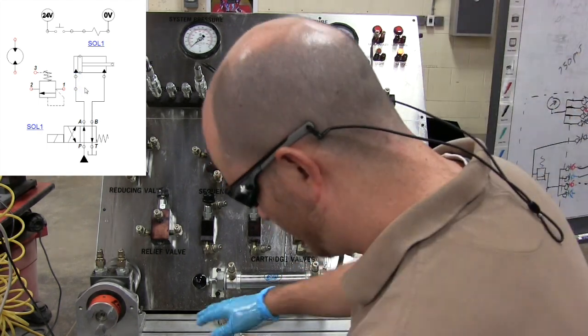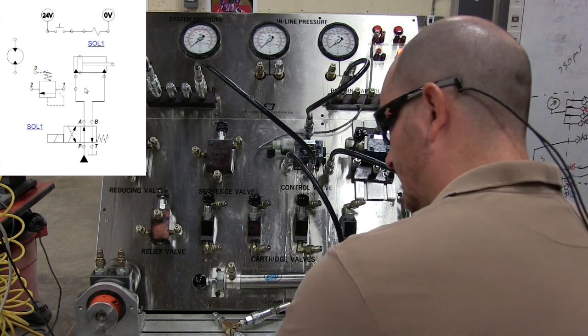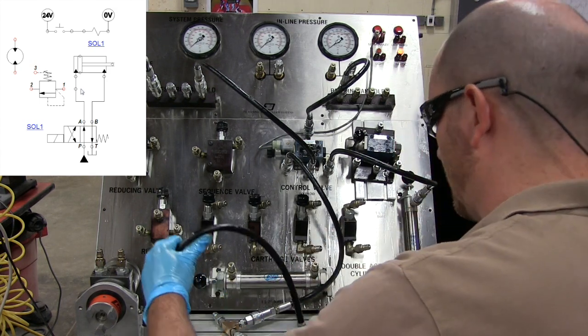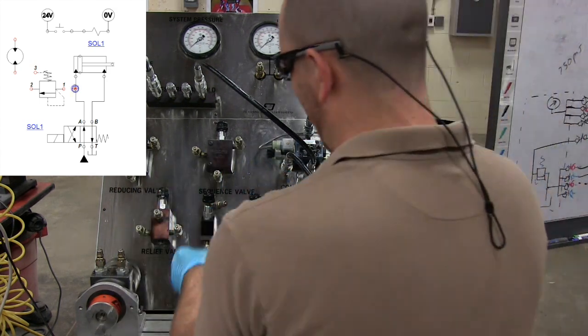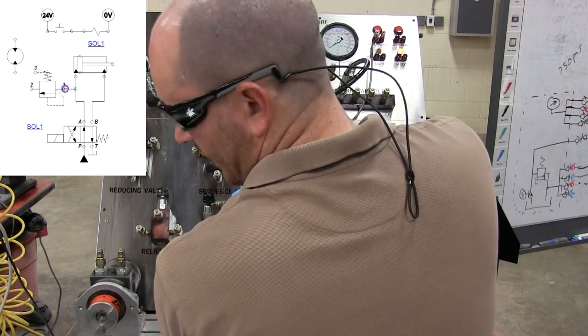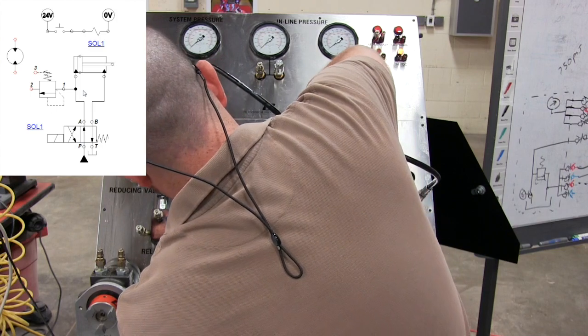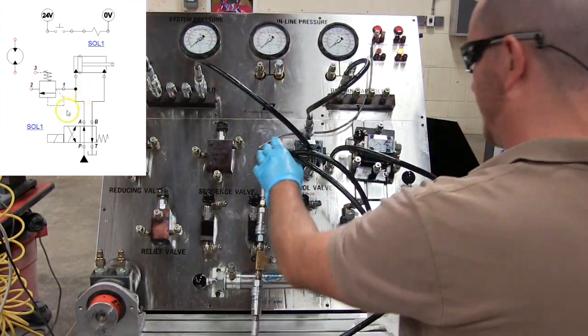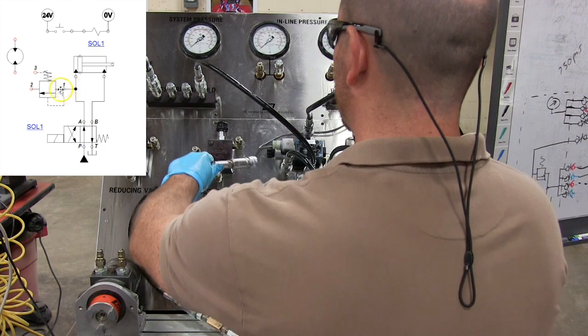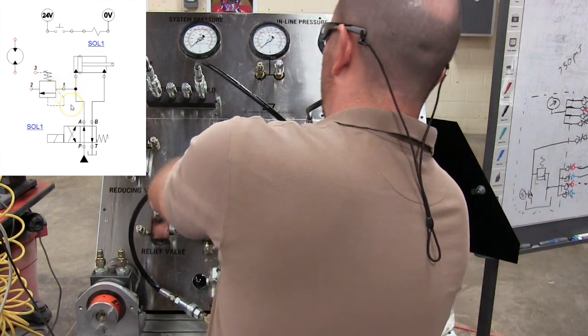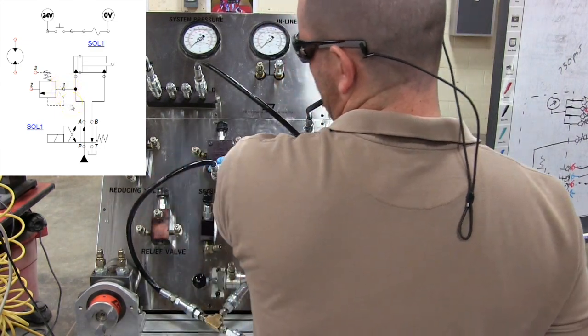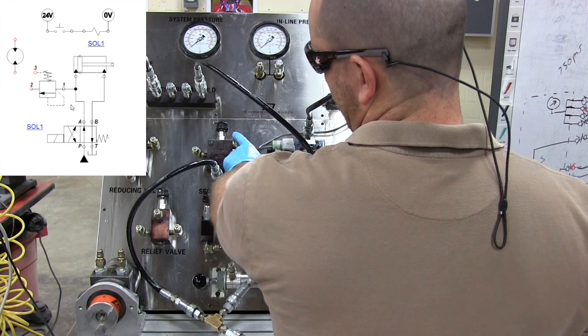The other connection on our T is going to go up to the sequence valve. This is going to go on this cartridge valve right here. This goes to the number one on this cartridge valve, which I know you can't see, but there's a one here, a two here, and a three here.